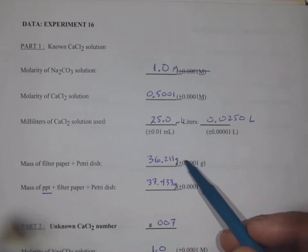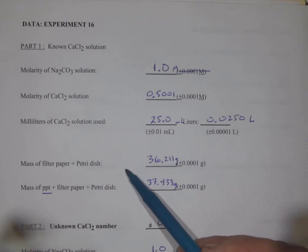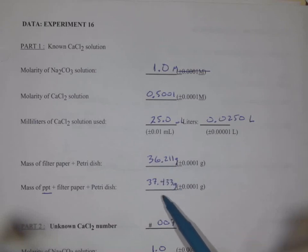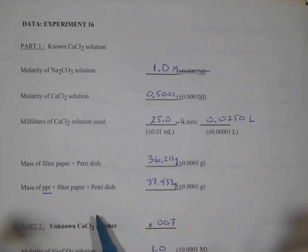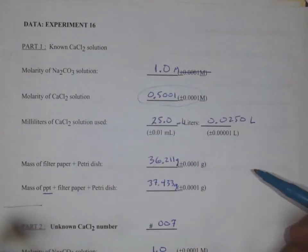And then after we've done the experiment, we found that the filter paper and the petri dish before we used them were 36.211 grams. Once we've collected and dried the calcium carbonate product, the combined mass, now including that precipitate, is 37.433 grams. Okay, so that's our part one. This is our known solution. We knew this one going in. We're seeing how well the experiment worked.